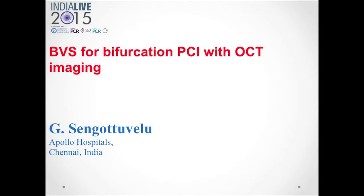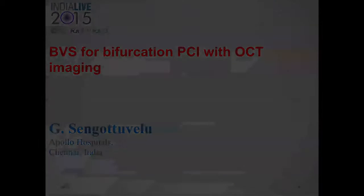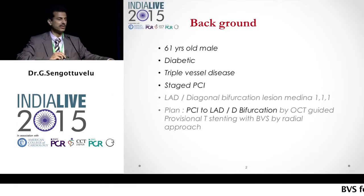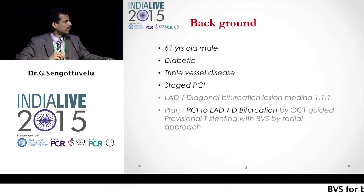This is a patient who had a LAD diagonal bifurcation disease. He had disease in the LAD diagonal and also in the septal. This is a 61-year-old diabetic patient who had triple vessel disease. We planned for staged PCI, and the first stage was for LAD diagonal bifurcation.